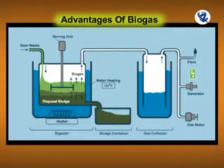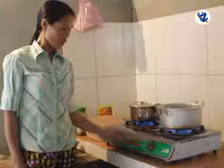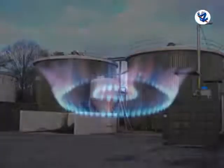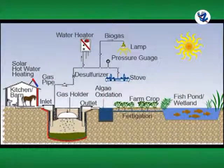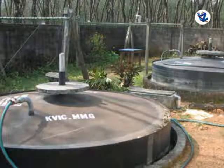Advantages of biogas: it is a cheap, safe, and renewable source of energy. It is used for domestic lighting, cooking, street lighting, and small-scale industry. It burns with a blue flame without smoke. It helps improve sanitation of the surrounding environment, is eco-friendly, and does not cause pollution. It can also be easily stored and transported.